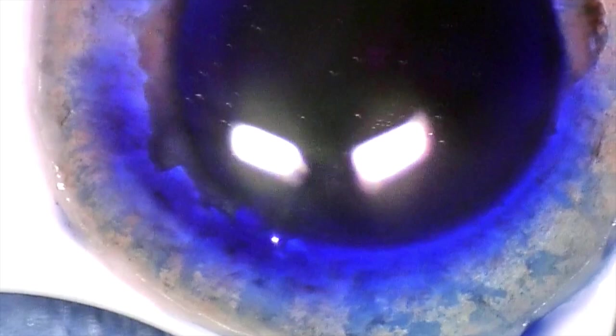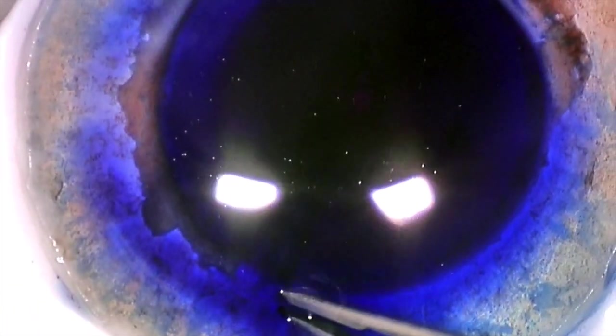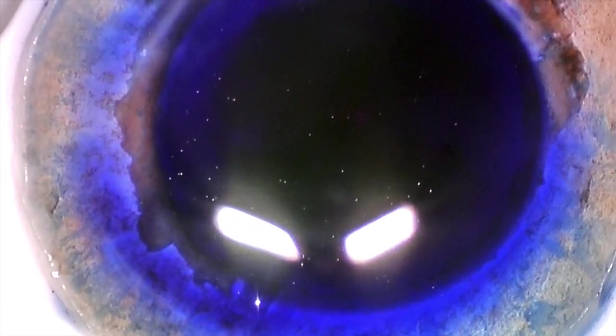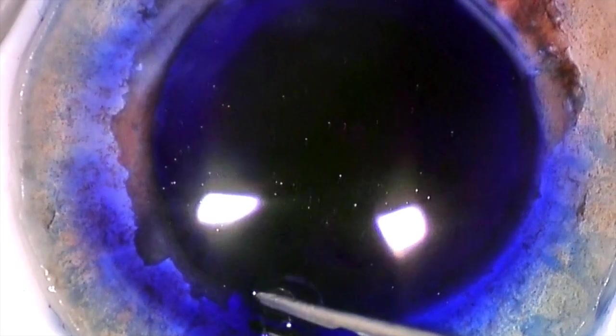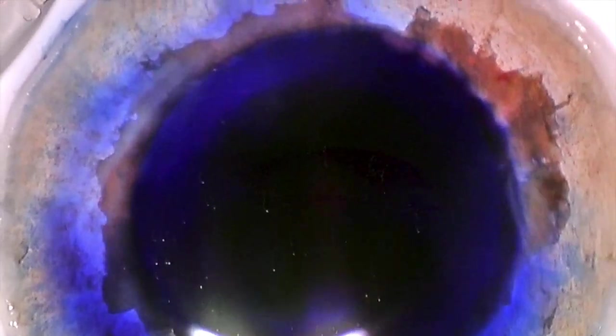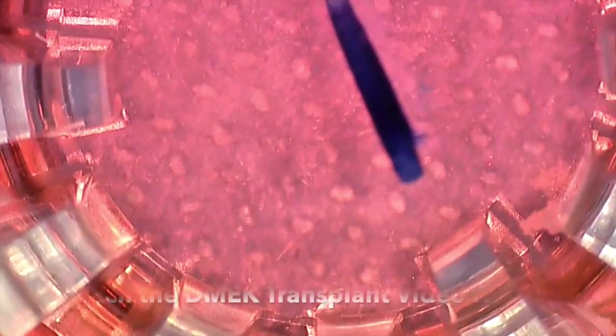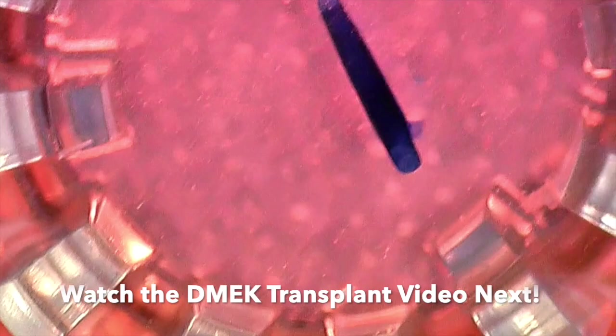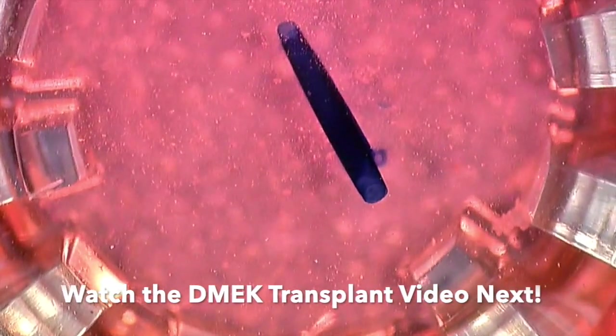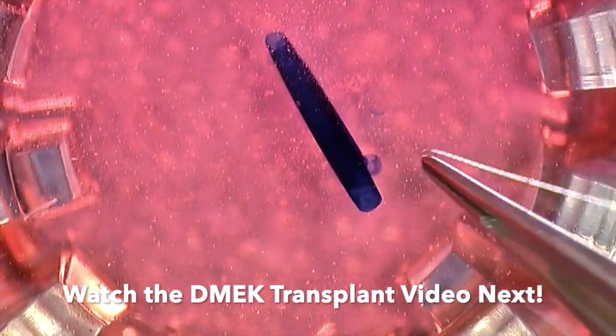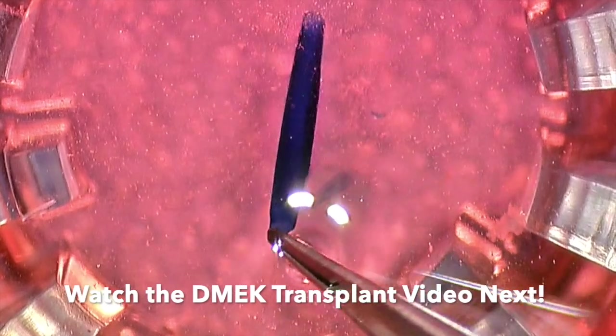I typically prep my tissue right before the case, although I have done it as much as 24 to 36 hours prior to the case and leave it in the Optisol. There you can see that scroll in the Optisol here and if you switch over to the DMEK surgical video you can see the scroll being placed in the eye and unscrolled inside the eye for the corneal transplant. Thanks so much.